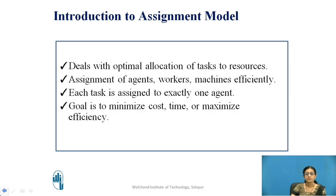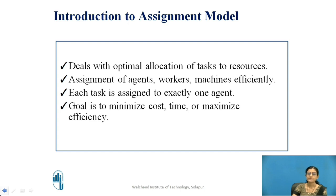An assignment model generally deals with the optimal allocation of tasks to resources. The resources can be agents, workers, or machines, and using the assignment model we have to assign resources to particular tasks efficiently. The assignment model focuses on a one-to-one assignment — exactly one agent per task. The goal is to minimize cost and time, or to maximize efficiency.